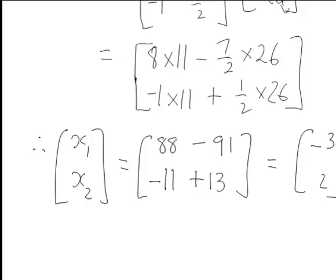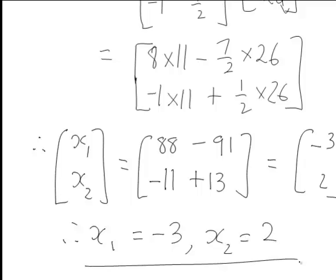Hence reading this off directly we can see now that X1 is equal to negative 3, X2 is equal to 2. So that is the solution to our system of equations solved using matrix inversion.